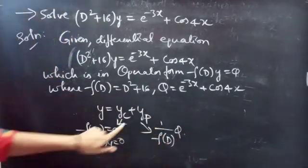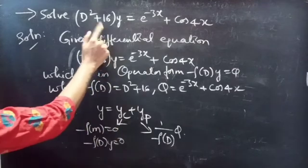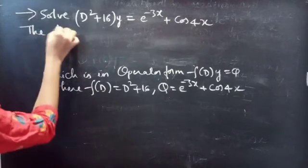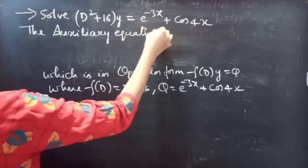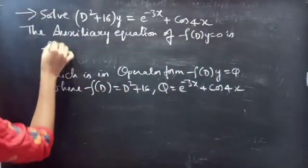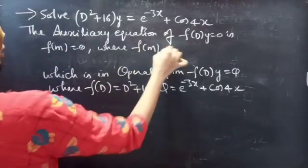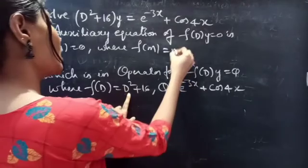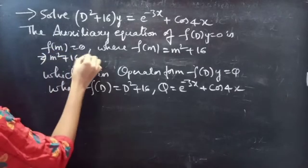Let's find the complementary function using the auxiliary equation of the homogeneous equation. The auxiliary equation of f(D)·y = 0 is f(m) = 0. Since f(D) = D² + 16, we replace the differential operator D by m to get f(m) = m² + 16. So our auxiliary equation is m² + 16 = 0.